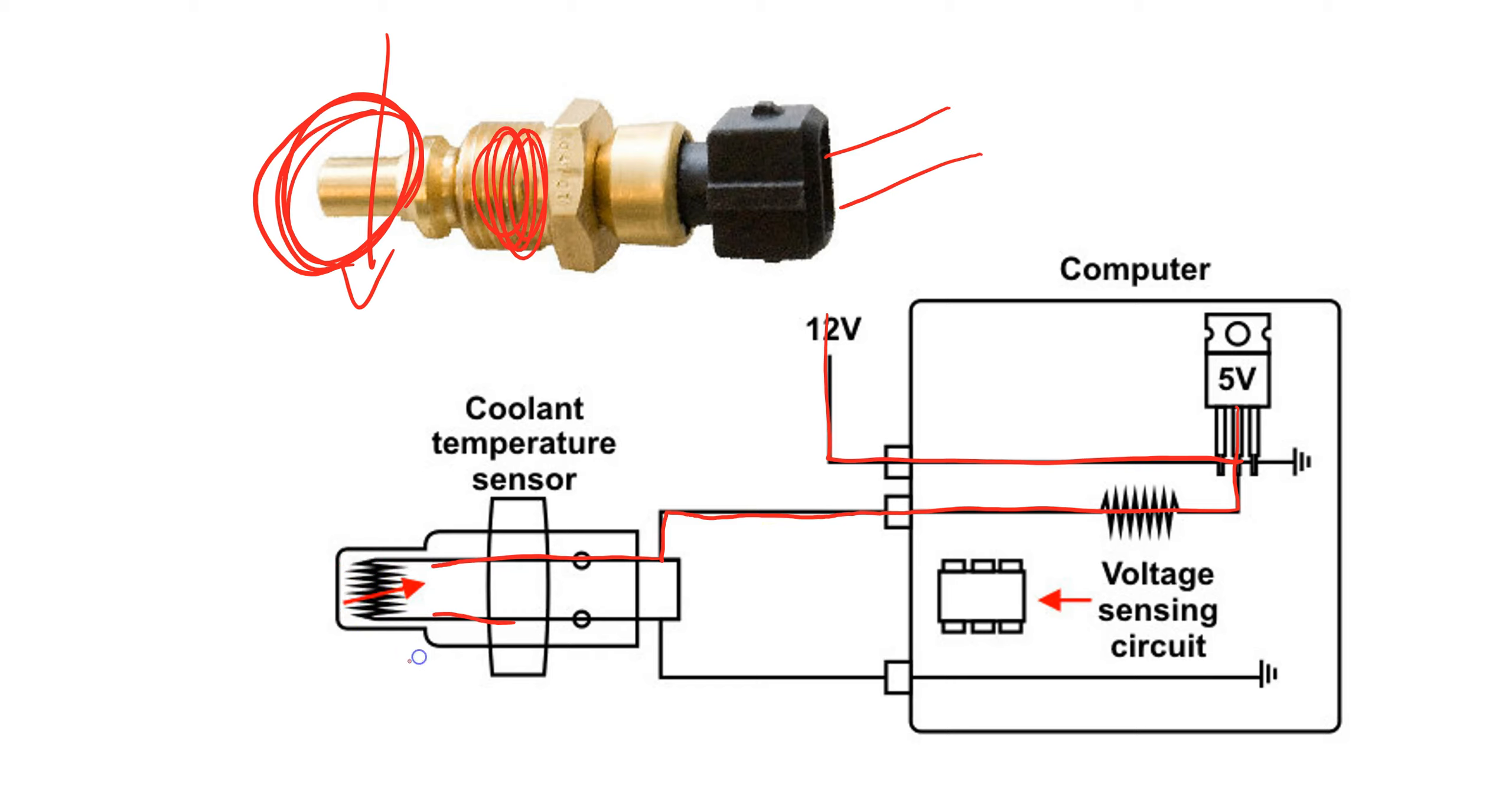Now this is called a thermistor. A coolant temperature sensor uses a resistor that varies with temperature. As the temperature goes up, that changes the resistance. When it changes the resistance, that means there's a voltage drop that changes, and that change in voltage drop gets sent back to the voltage sensing circuit and then the computer can make a decision.